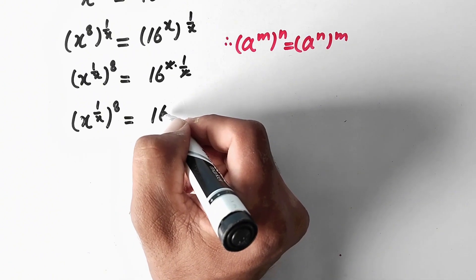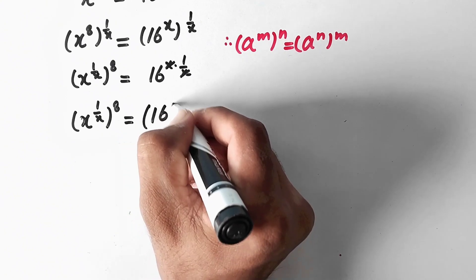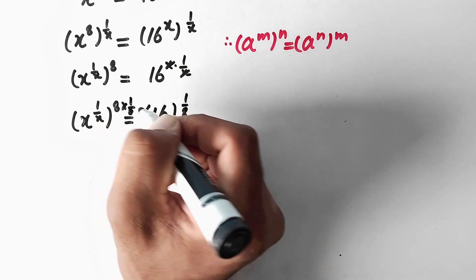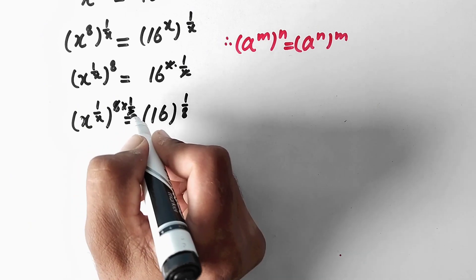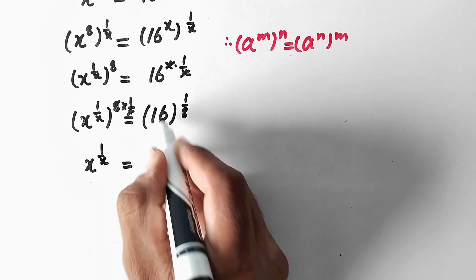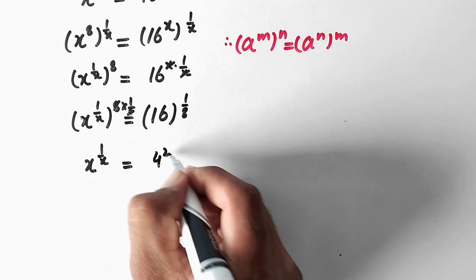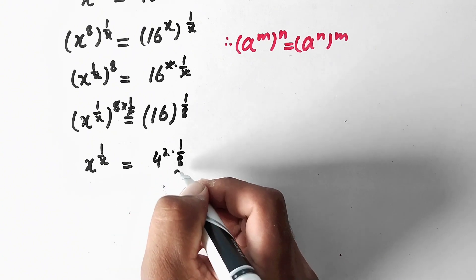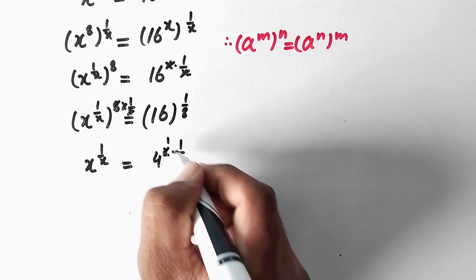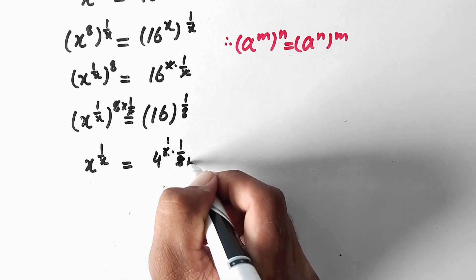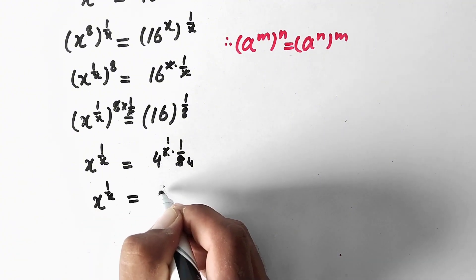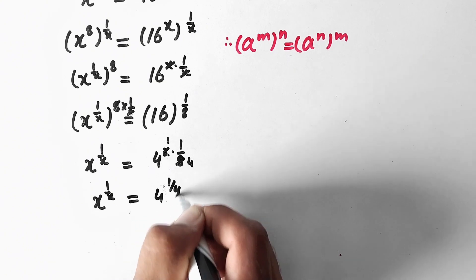Now we will take the power of 1 over 8 on both sides to eliminate this 8. We are left with x to power 1 over x to power 1 over 8 is equal to 16 to the power 1 over 8. Since 16 is the same as 4 squared, we get 4 squared times 1 over 8, and dividing gives us 2 times 1 over 4 times 2 equals 1 over 4. So we have x to power 1 over x is equal to 4 to power 1 over 4.